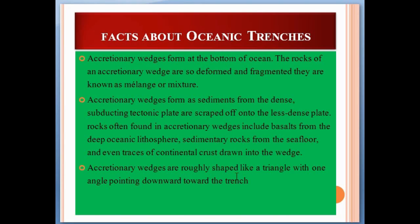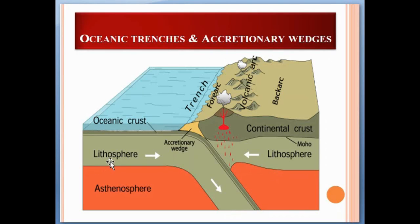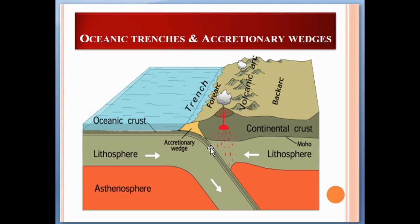Accretionary wedges are roughly shaped like a triangle, with one angle pointing downward towards the trench. Here you can see the oceanic crust and the continental crust — two plates. When these two plates collide, the less dense plate is folded or crumpled. This is the accretionary wedge, which forms when sediments of the oceanic crust are scraped off towards the less dense continental crust. The accretionary wedge is triangle-shaped, pointing towards the subducting zone.